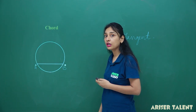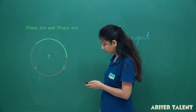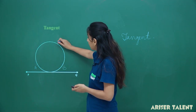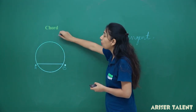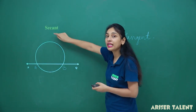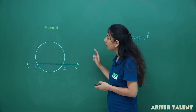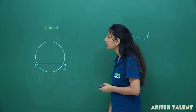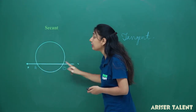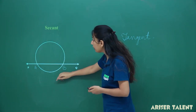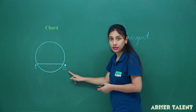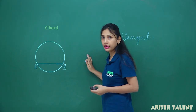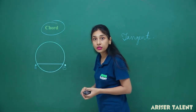Know the difference between tangent, secant, and chord. In secant I was having a line. If there is a line segment — meaning nothing extends beyond the boundary of the circle — then I will call it a chord. Know the difference.